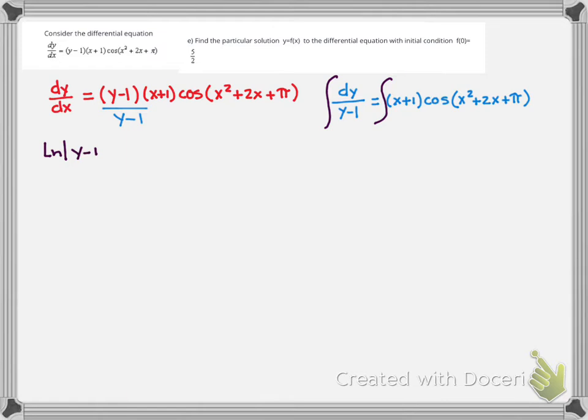The integral of the other side has an inner function, this inner function is x squared plus 2x plus pi. The derivative of that, when we think about u being x squared plus 2x plus pi, that means u prime is 2x plus 2, or factored out is 2 times the quantity x plus 1.